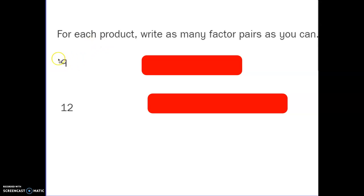For each product, write as many factor pairs as you can. That means the product is the answer to a multiplication problem. Your task is to write as many multiplication problems or factor pairs as you can that has 9 as a product and 12 as a product.